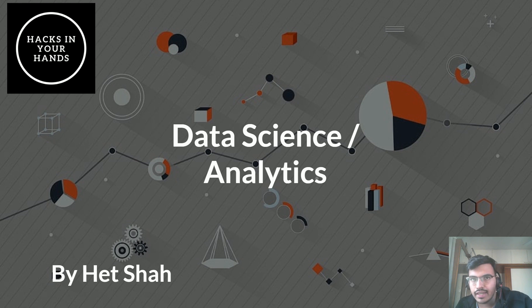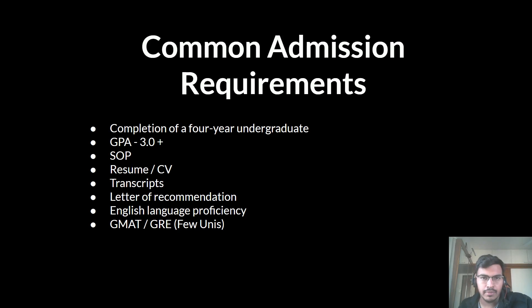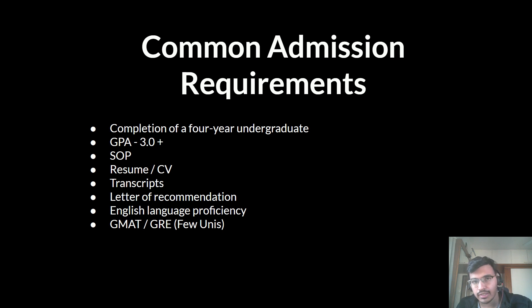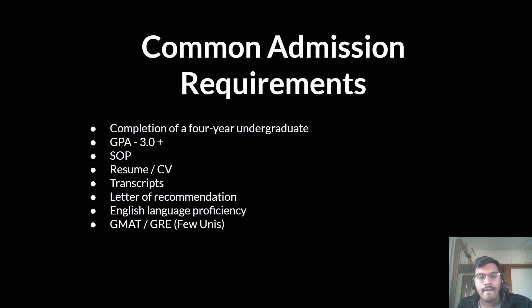Before going into the list of data science and analytics courses, I would like to tell you some common admission requirements. If you are applying for any graduate program, they would require a four-year undergraduate bachelor's degree, a GPA of 3.0 or more, a statement of purpose telling them why you want to study a specific program at that specific university, your resume, your transcripts, and letters of recommendation — either academic or professional. For English language proficiency, mostly they accept IELTS, and 6.5 is the minimum band score with no less than 6 in any band.